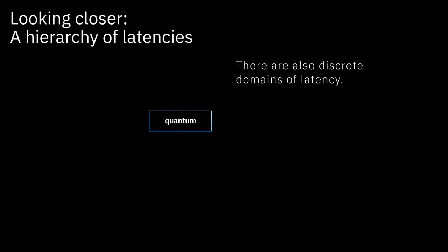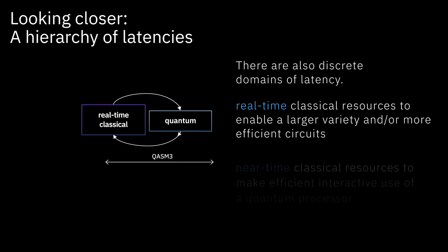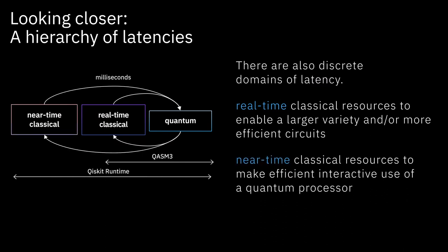There is a real-time interaction domain involving feedback and feedforward of quantum measurements to enable dynamic circuits and steering of a computation in real time. This is a very demanding latency domain in order to get the data to different parts of the quantum processor in time to execute it. There is also a near-time interaction domain, which doesn't have the same stringent latency requirements but demands a much more generic computing facility. These latency domains are sufficiently different that we've built different technologies to address each of them.